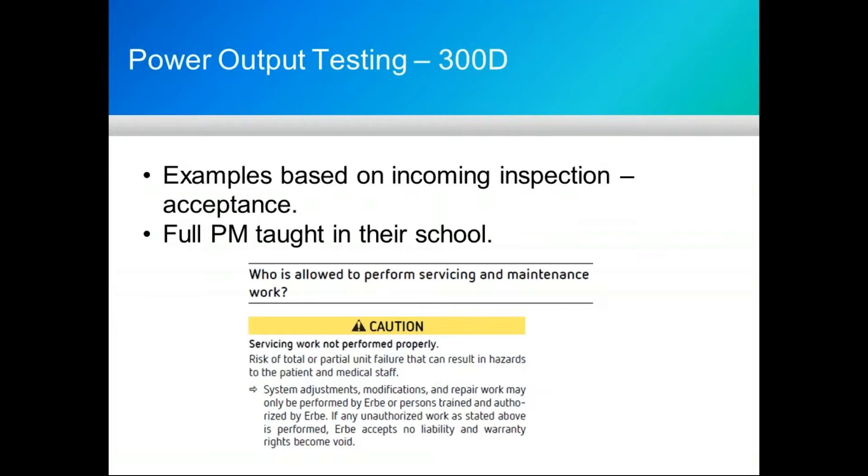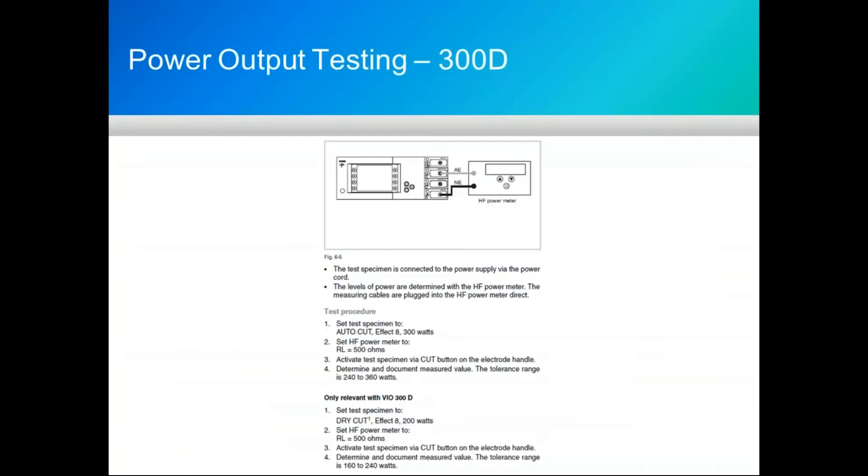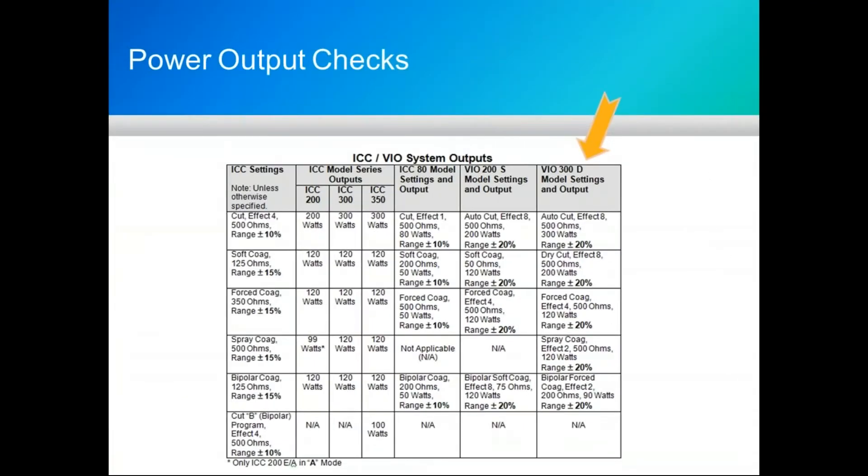Here's ValleyLab: depending on the type of test, whether coag, cut, or bipolar, they use various resistance values: 500 for coag, 300 for cut, 100 for bipolar. Megadyne units use 300 ohms for cut and 500 for blend coag. The APEX for Medtronic uses 100 ohms for several tests, 500 ohms, and then 1000 for some tests. Their tolerances are all based on power output as the ERBE 300D is. The examples we're going to show in videos are based upon the specification sheet they provide for incoming inspection and acceptance of the generator going into the facility. The full PM is taught in their training school, and we'll give some examples of that as far as test specifications. We're focused here on several power output tests, the NESSIE test circuit, and also the high-frequency leakage testing.